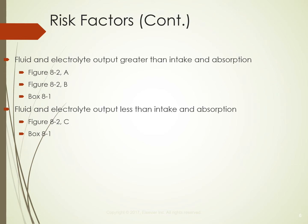On page 63 in your concepts book, chapter 8, figure 8-2 illustrates balanced fluid states. The first picture shows normal output balanced by normal intake, so extracellular vascular fluid, osmolality, and plasma electrolytes are all normal. The second picture shows decreased output balanced by decreased intake — again everything is normal. The third shows increased output balanced by increased intake, still maintaining normal values.